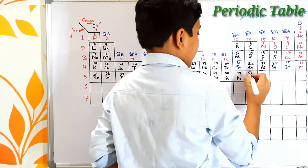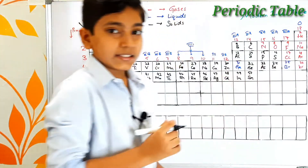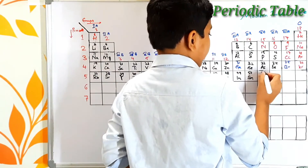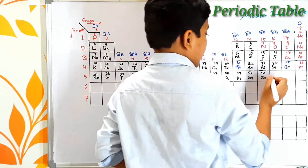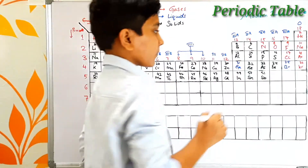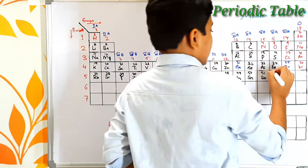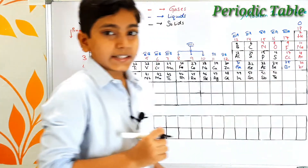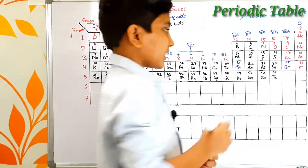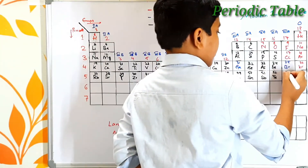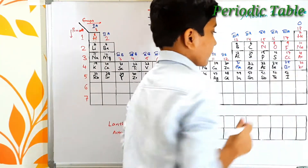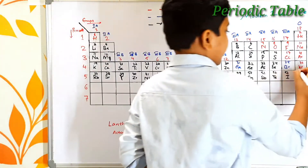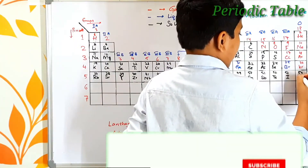Atomic number 50 is tin — its symbol is Sn. Atomic number 51 is antimony — its symbol is Sb. Atomic number 52 is tellurium — its symbol is Te. Atomic number 53 is iodine. The next element is atomic number 54 which is xenon — its symbol is Xe.